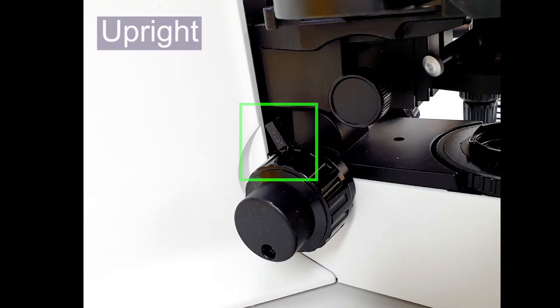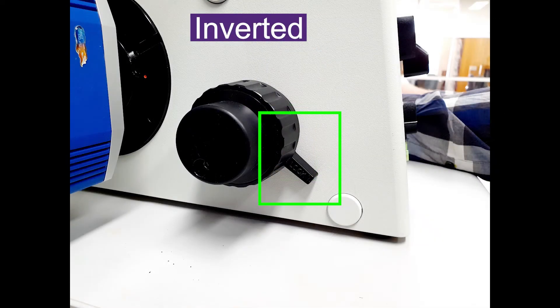The position lock can be very helpful to limit the objective from touching the sample during normal microscopy operation.